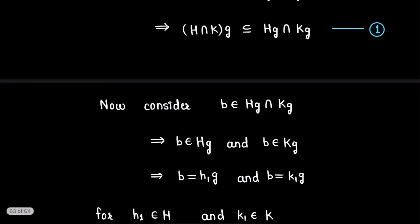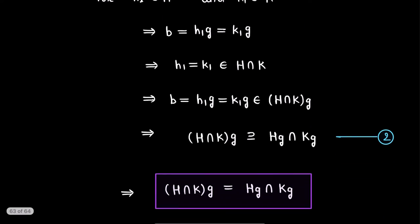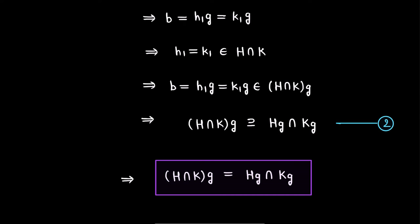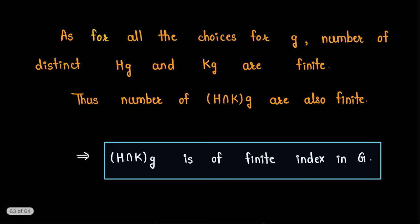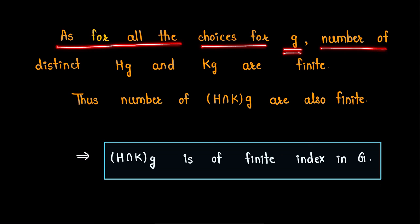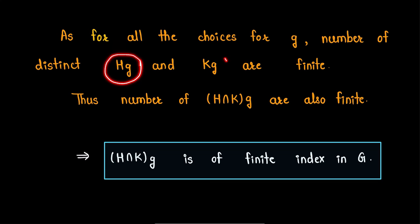Therefore from 1 and 2, we have (H intersection K)g equals Hg intersection Kg for all elements g in group G. Now since the number of distinct cosets Hg and distinct cosets Kg are finite — because both H and K are subgroups of finite index in G — the number of cosets (H intersection K)g are also finite. This implies H intersection K is of finite index in G.